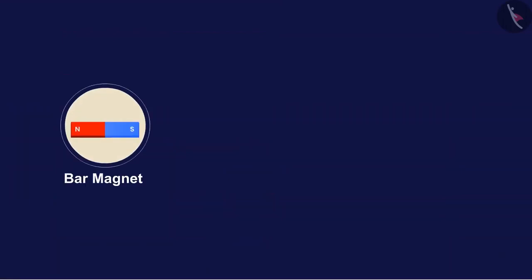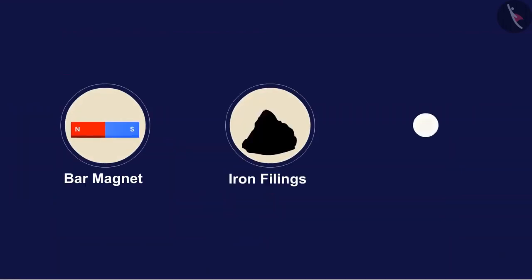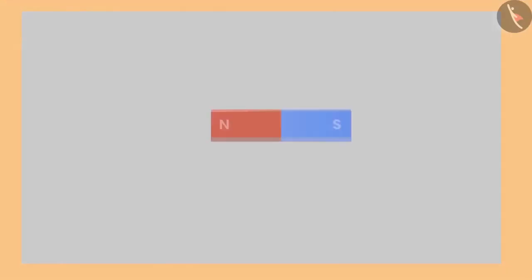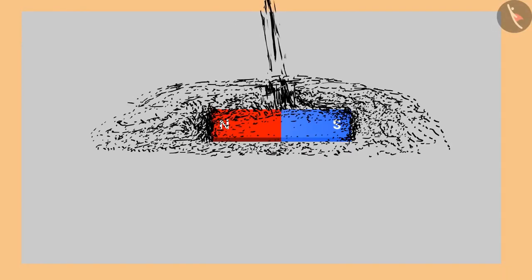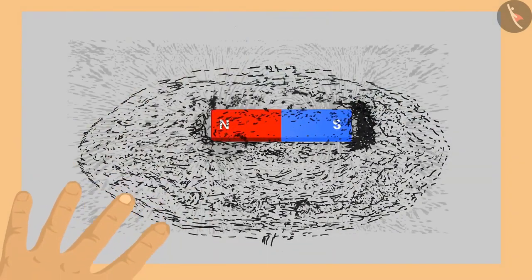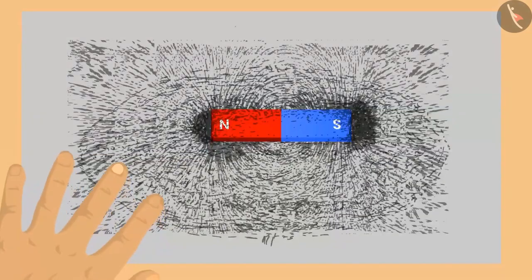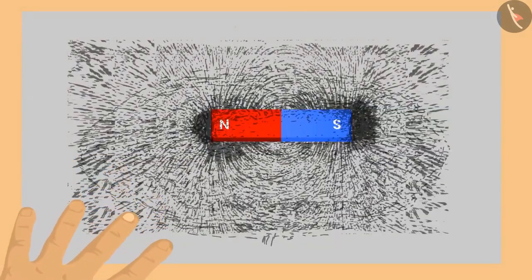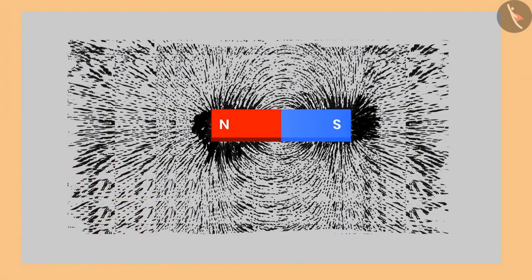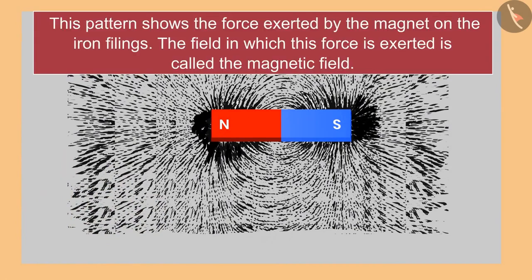To understand this, let's perform an activity. We need a bar magnet, iron filings, and a white sheet. Place the bar magnet at the center of the sheet and slowly pour iron filings over it, then tap the sheet two to three times. If we look at the filings closely, a formed pattern can be seen.